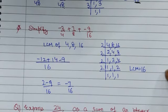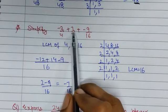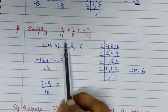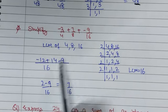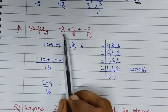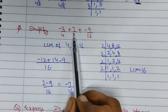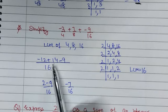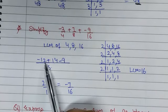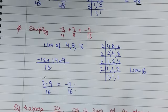Simplify: minus 3 upon 4 plus 7 upon 8 plus minus 9 upon 16. Take the LCM of 4, 8, and 16, which is 16. 16 divided by 4 is 4; 4 into minus 3 is minus 12. 16 divided by 8 is 2; 2 into 7 is 14. 16 divided by 16 is 1; 1 into minus 9 is minus 9. So minus 12 plus 14 is 2, minus 9 gives minus 7 upon 16.